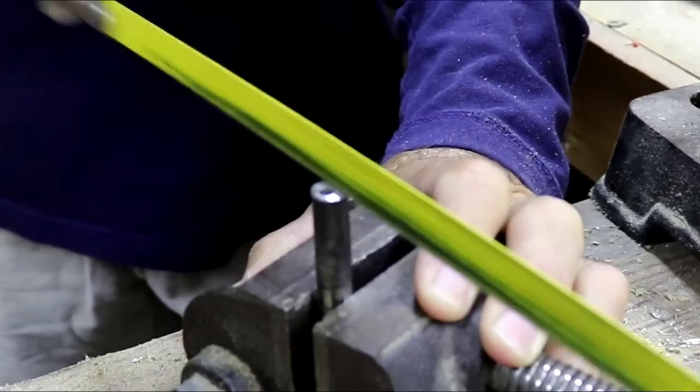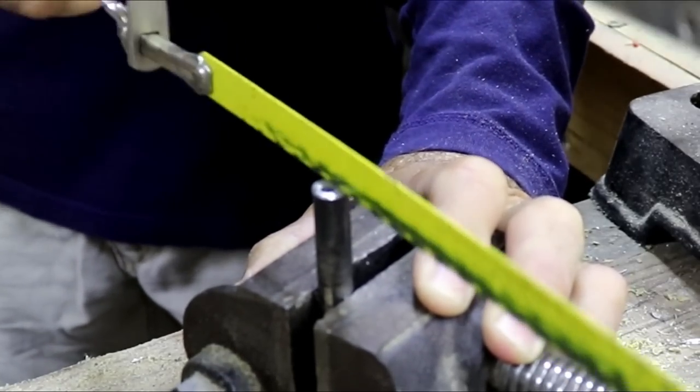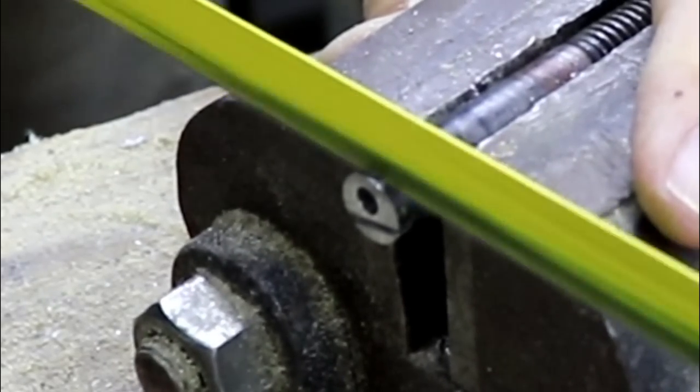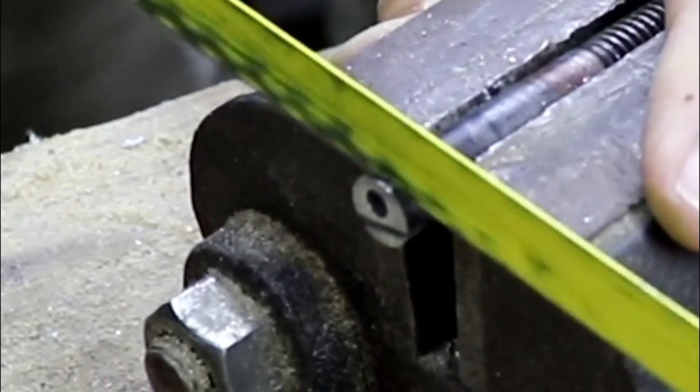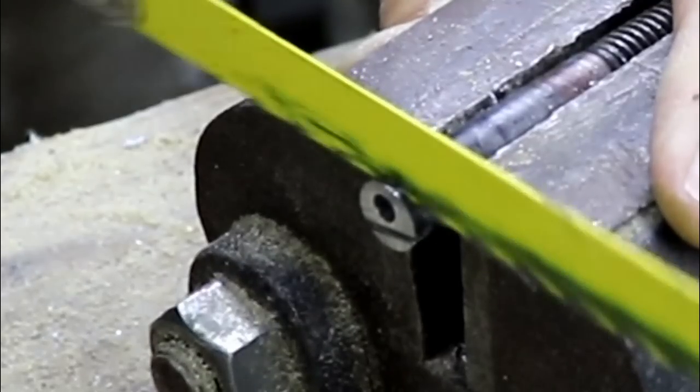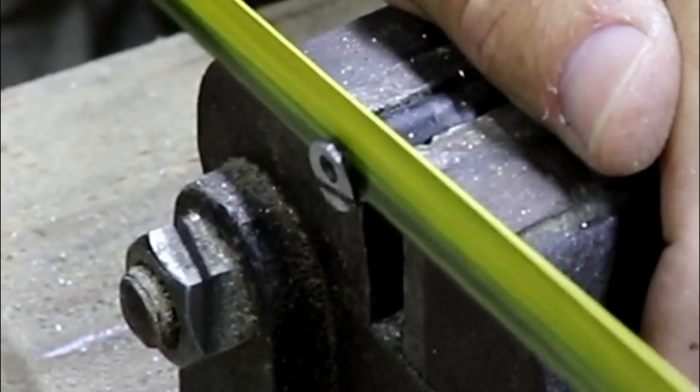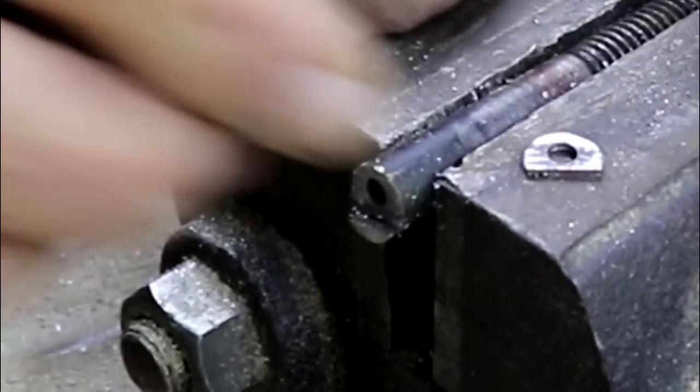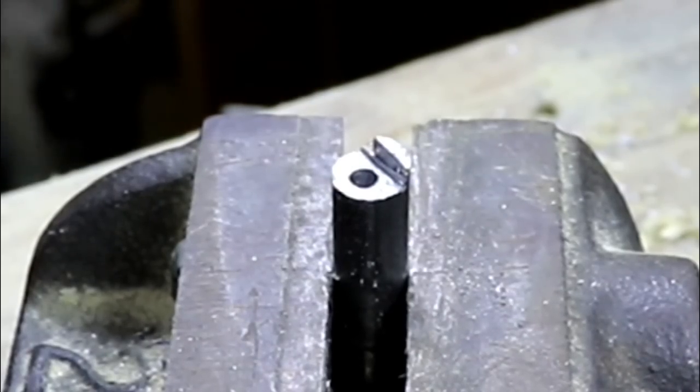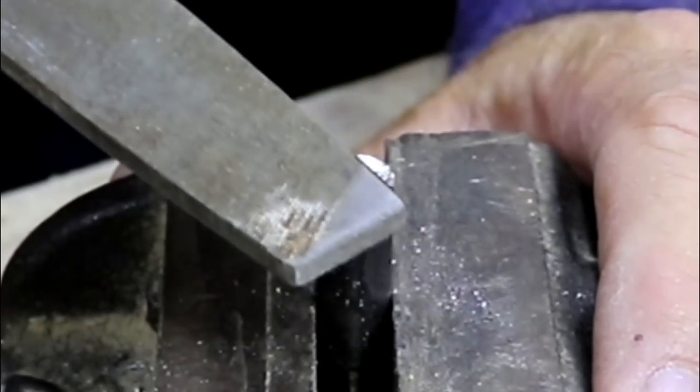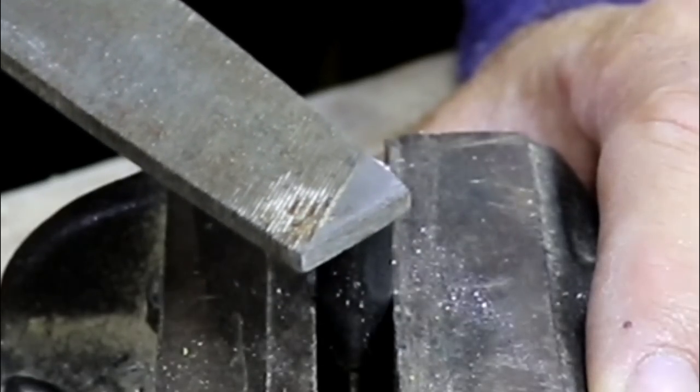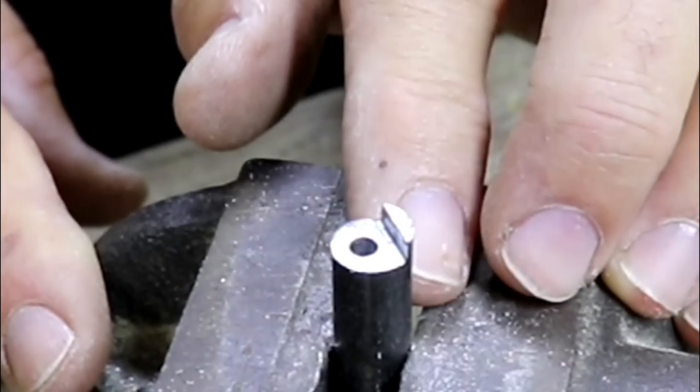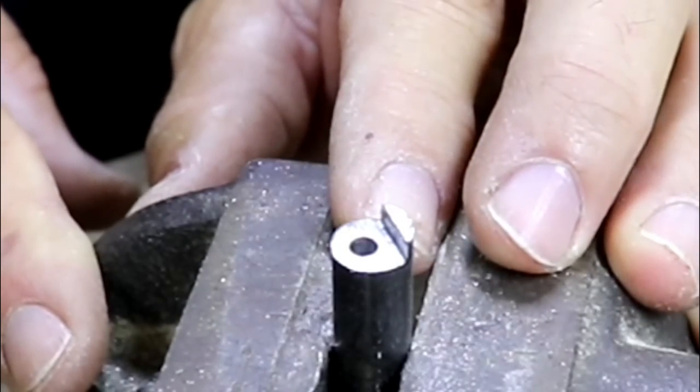Now, I'm going to go ahead and cut the shoulder down to depth, which is about a sixteenth of an inch as well. Now I'm going to cut that face off down to the depth of that shoulder so that I can create that offset. Now a little more cleanup with a file. All right, that looks pretty good, but I'll clean up these sharp edges with a smaller file.